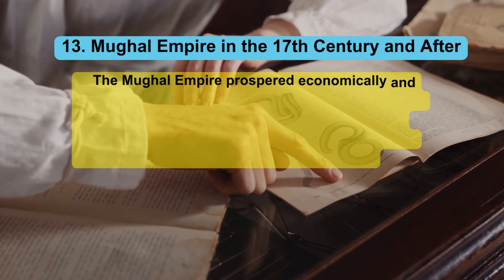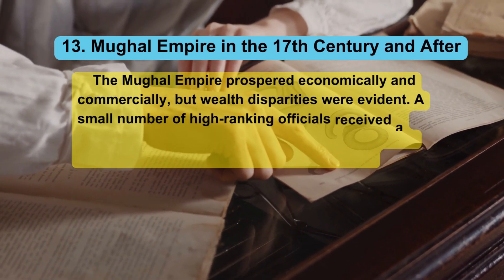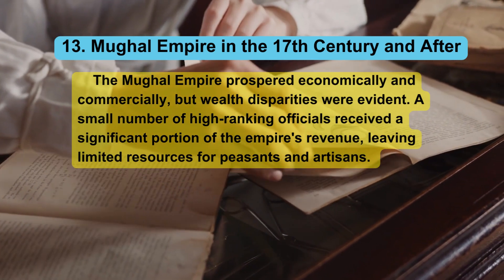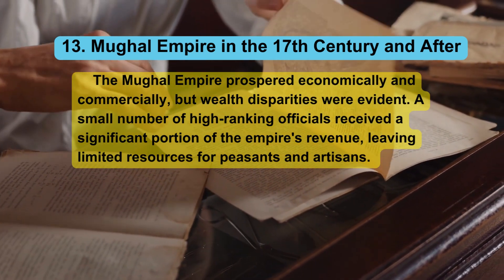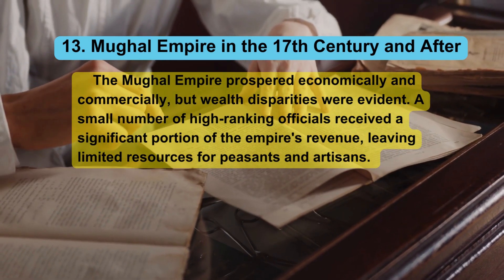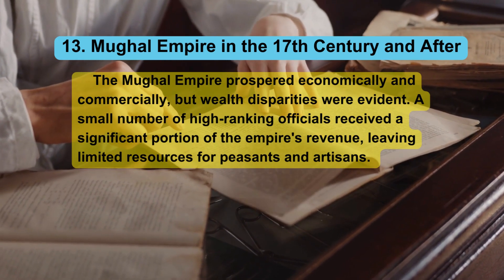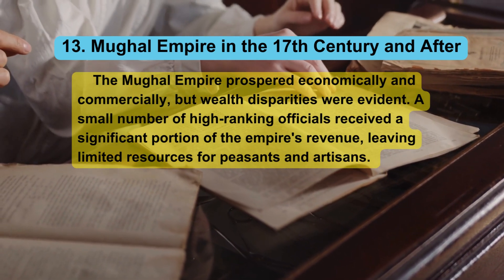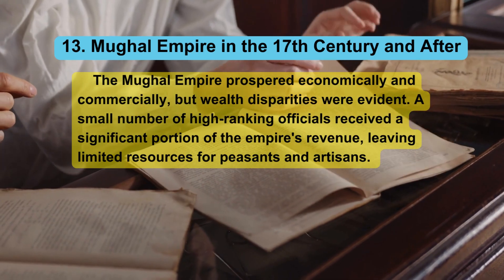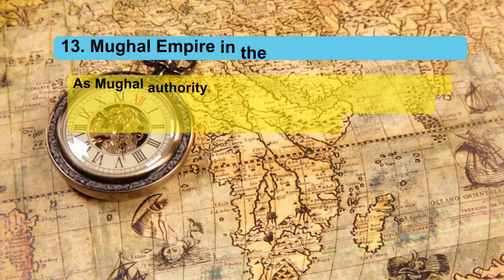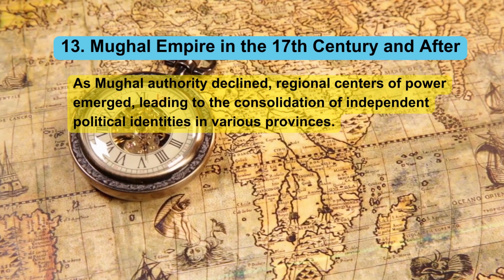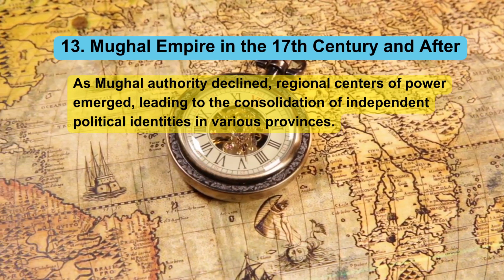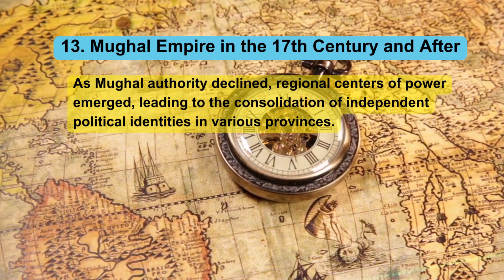13. Mughal Empire in the 17th century and after. The Mughal Empire prospered economically and commercially, but wealth disparities were evident. A small number of high-ranking officials received a significant portion of the empire's revenue, leaving limited resources for peasants and artisans. As Mughal authority declined, regional centers of power emerged, leading to the consolidation of independent political identities in various provinces.